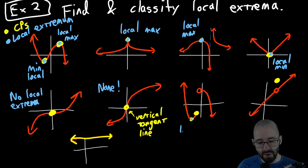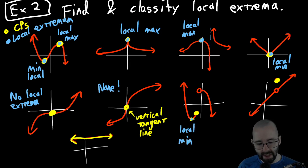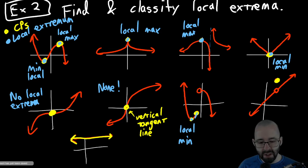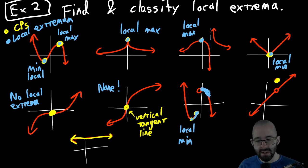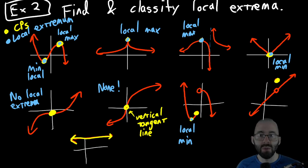What about the next one? This one has a more traditional local min down here. You might wonder about the second point, but if we look at the graph on an interval to the left and to the right of the second point — well, to the left it gets smaller, to the right it's bigger — there is no local extremum at that second point. There's only one local extremum here.